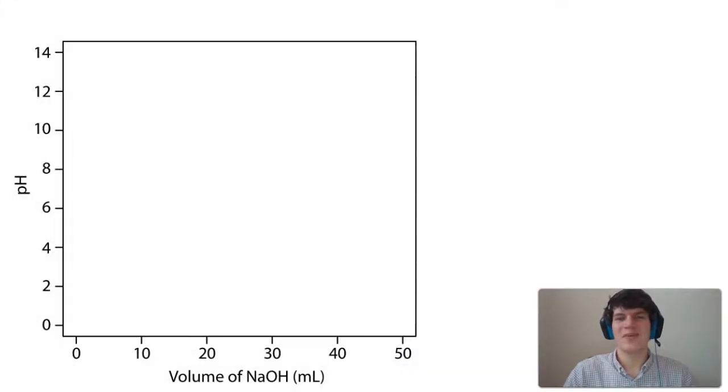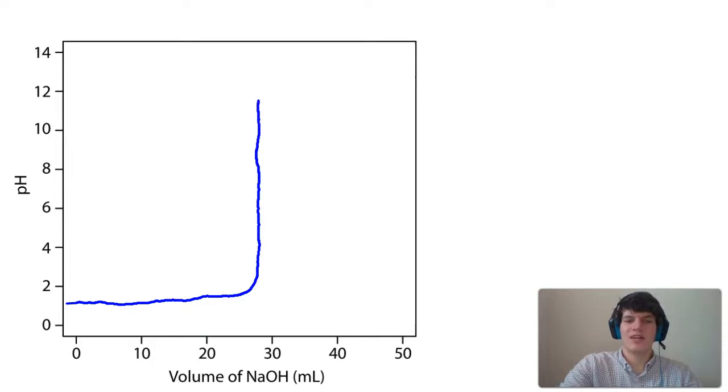We are told that the steep part of the titration curve ranges from a pH of 1.8 to 12.7. That means that as the pH is increasing, once it reaches 1.8, it's almost going to go straight up. And then once it reaches 12.7, it's going to level off again and go almost flat until the end there.